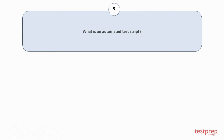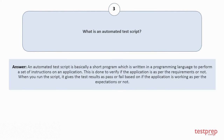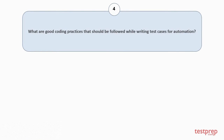Question number three: What is an automated test script? An automated test script is basically a short program written in a programming language to perform a set of instructions on an application. This is done to verify if the application meets the requirements. When you run the script, it gives test results as pass or fail based on whether the application works as expected.